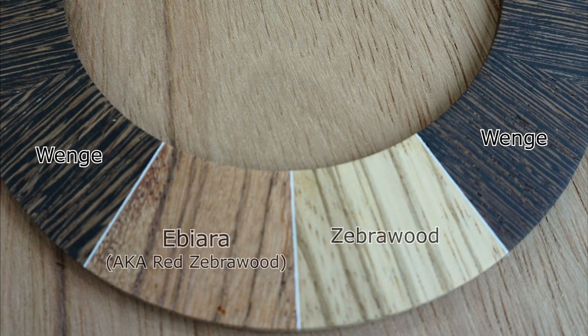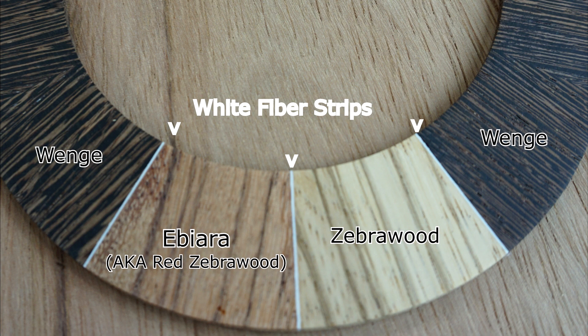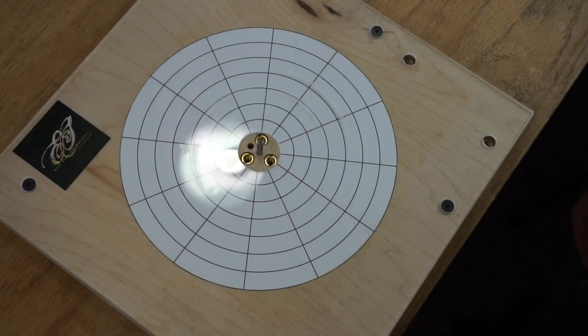I've also used two different brighter woods to highlight the widest part of the rosette and I've framed those radial segments with white fiber strip material. I'll talk a little more about that part of the rosette later on. Now let's get started.